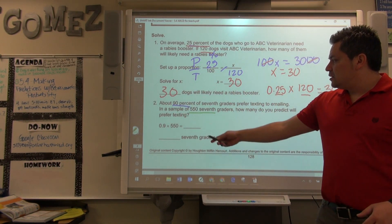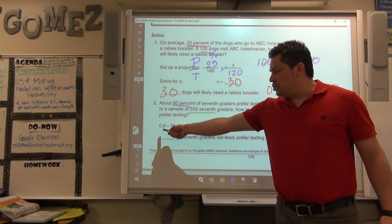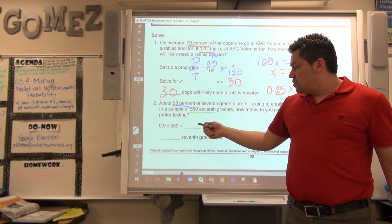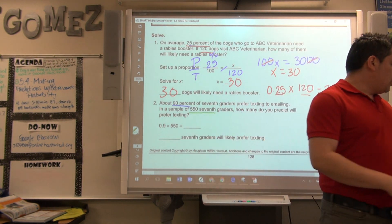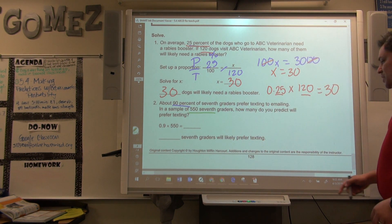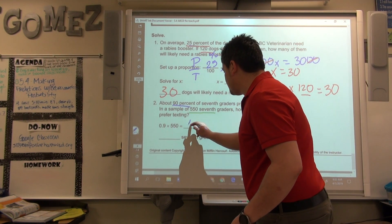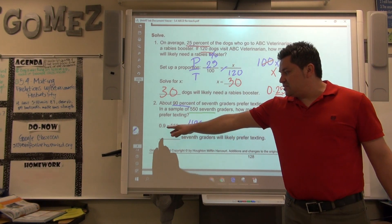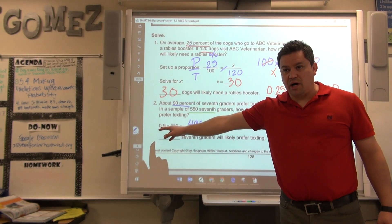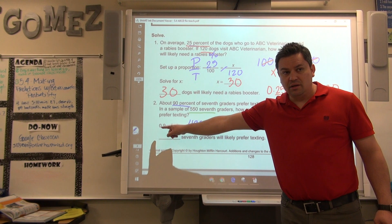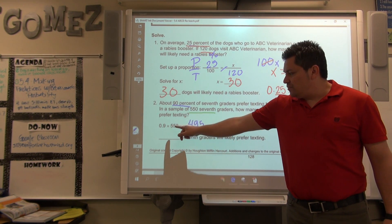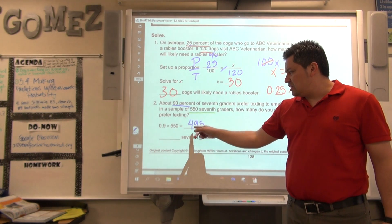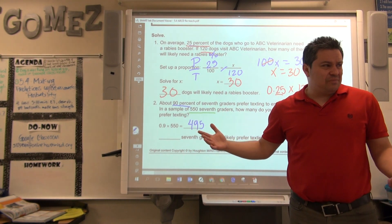90% as a decimal is 0.9. What's my total number of students? 550, which is right here. And when you multiply those two, you get 495. And you can see that this is not 1. It's really close to 1. If that would have been 1, that would have been 550, right? So if it's a little less than 1, it has to be less than 550 in this case, which is, that is. And it kind of makes sense.